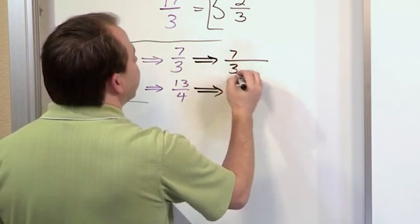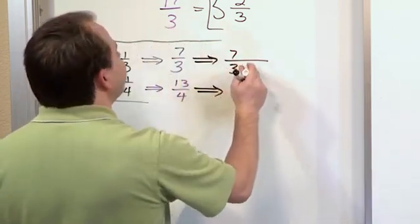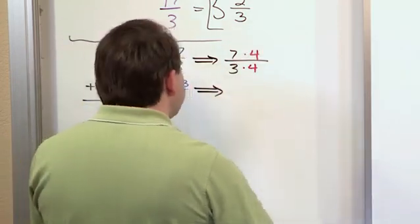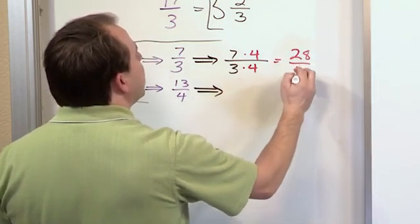So, we'll have 7/3, and we'll be multiplying this guy by four on the bottom and four on the top. The reason we're doing that is because on the top then we will have twenty-eight, and the bottom, three times four, we'll have twelve.